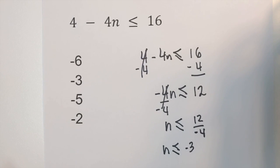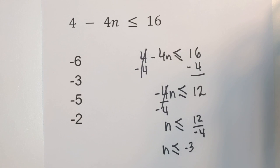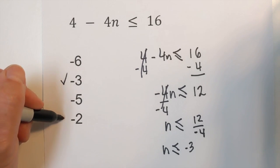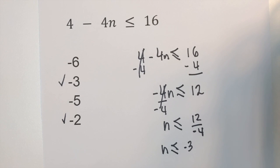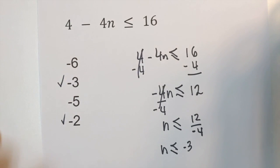So now let's see what satisfies this inequality. Well negative 3 does because it's equal to, and what's less than negative 3? Negative 5 is less than negative 3. Now what I'm going to do is I'm going to show you why this works. Let's put in a negative 5.